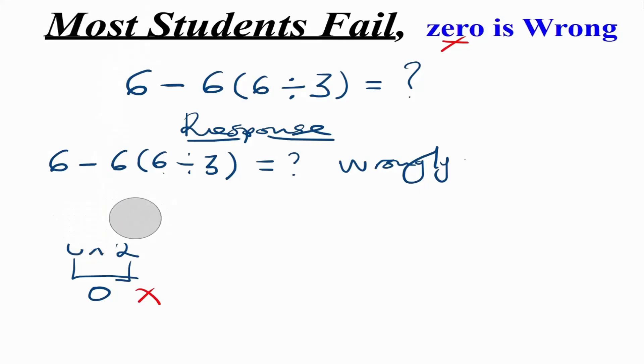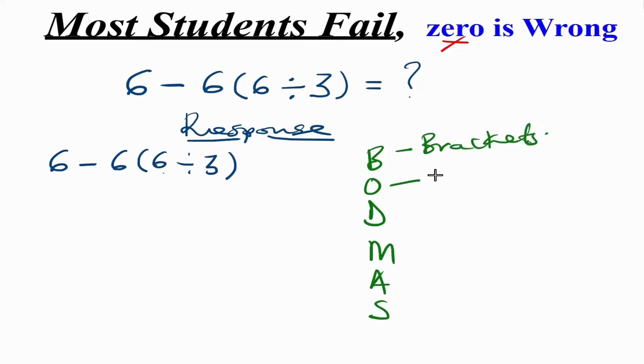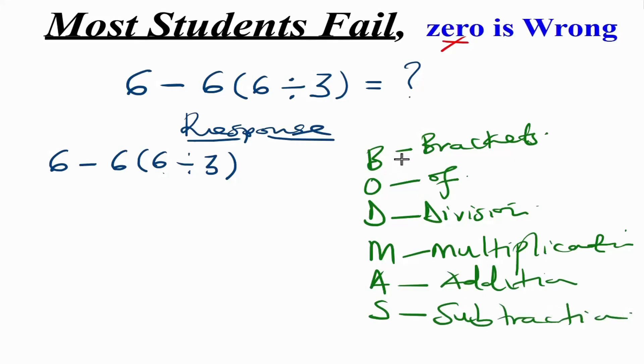So now what is the correct response? Let us have the correct version of this. In here we are going to follow BODMAS. BODMAS is going to guide us to get the correct response or result to this question. We have BODMAS in here as you can see, whereby in detail B stands for brackets, O stands for of, D stands for division, M stands for multiplication, A stands for addition, and S stands for subtraction.